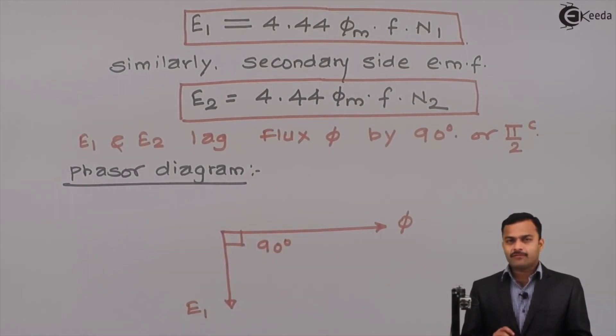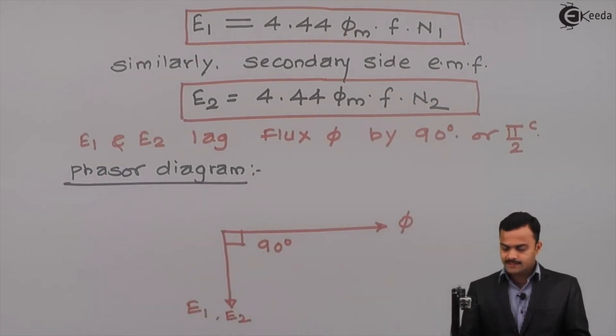Similarly, same flux phi is linking with secondary winding. Hence, EMF 2 will also lag behind this phi by 90 degrees.